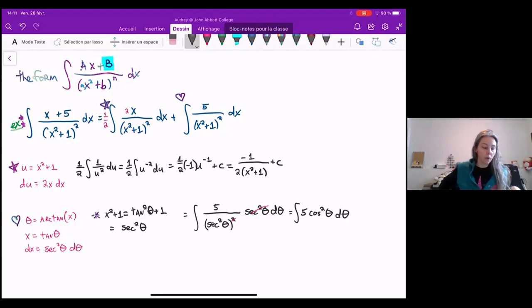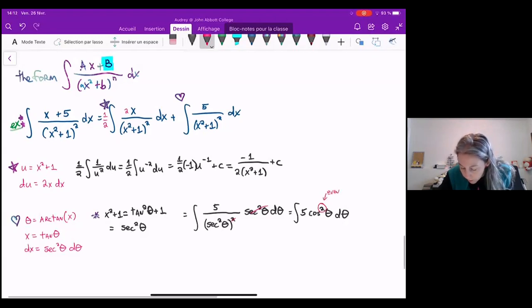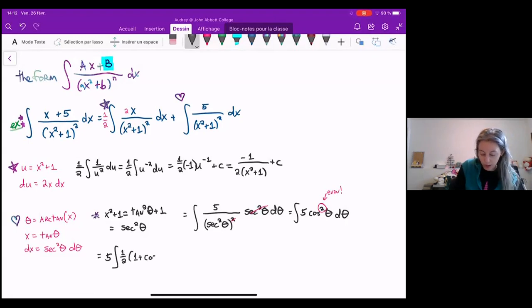And to do the integral of 5 cosine squared theta, because this power is an even power and it's cosine, we know that a Pythagorean identity is not going to be useful. So instead, we have to use our half angle identity. So this becomes 5, the integral of 1 half times 1 plus cosine of 2 theta. We're just using our double angle identity there. And now we've turned it into known forms. So here we have 5 over 2 theta plus 1 over 2 sine of 2 theta plus a constant.